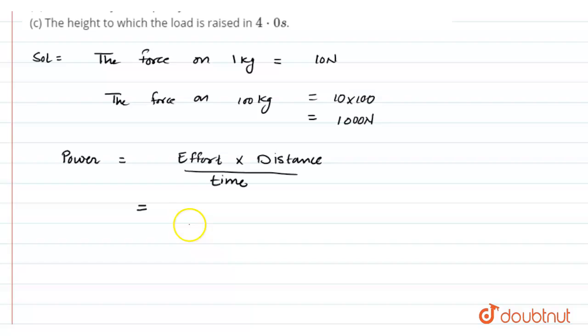The effort applied here is 1000 newton and the distance moved is 8 meter and the time taken by the body is 4 seconds. By cancelling 4 with 8 we will get power input equal to 2000 newton.